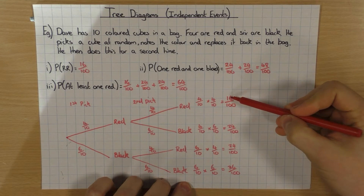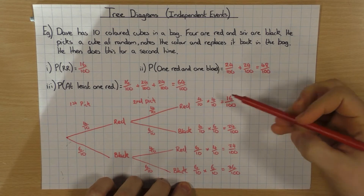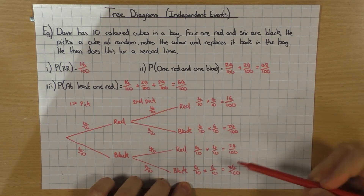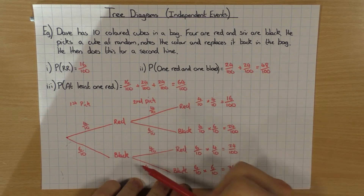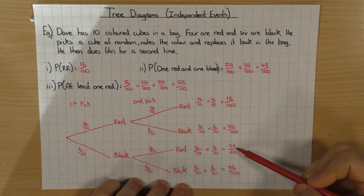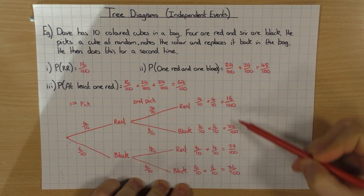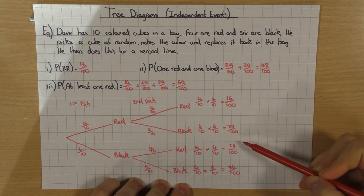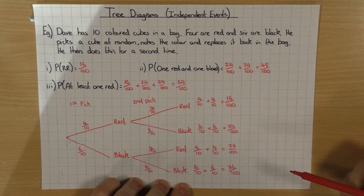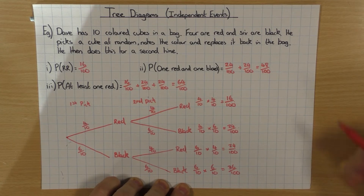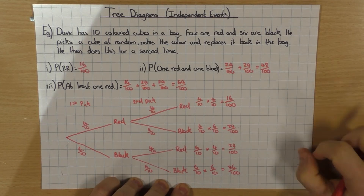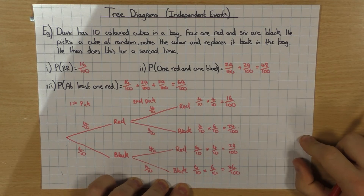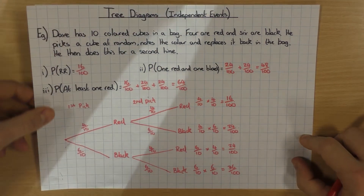Just a quick point: if you look at the end outcomes — red-red, red-black, black-red, black-black — these are the only four outcomes you can have, so they'll also add up to one. Sixteen over a hundred, plus twenty-four over a hundred, plus twenty-four over a hundred, plus thirty-six over a hundred gives one hundred over one hundred, which is one. Because remember, probabilities for all outcomes need to add up to one.